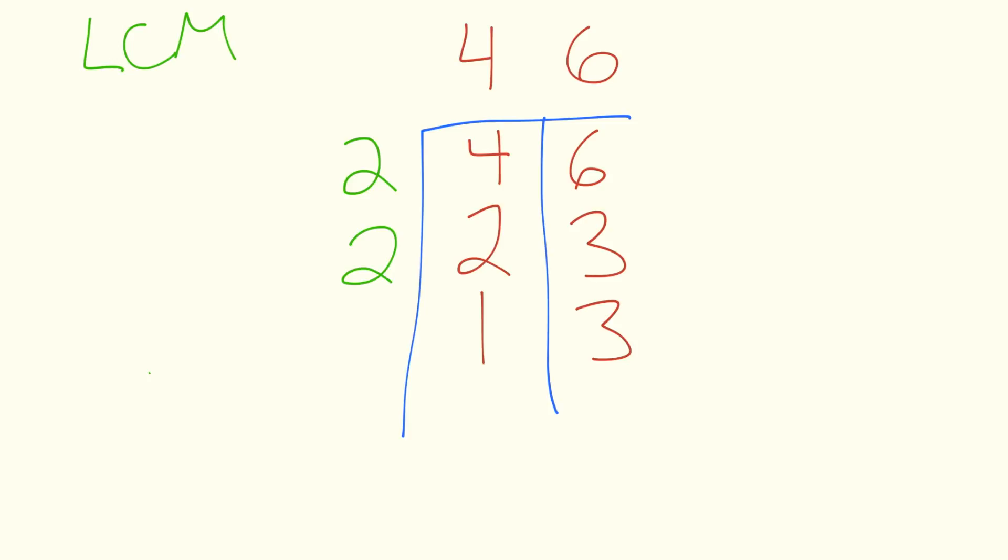In our new row, what's the smallest prime number that goes into 1 or 3? Well there are no prime numbers that go into 1, so we look at the 3. The smallest prime number that goes into 3 is just itself, which is 3. We leave the 1 alone, because we can't do anything with it, and we look at how many times does 3 go into 3? That's once. So we write a 1 here.